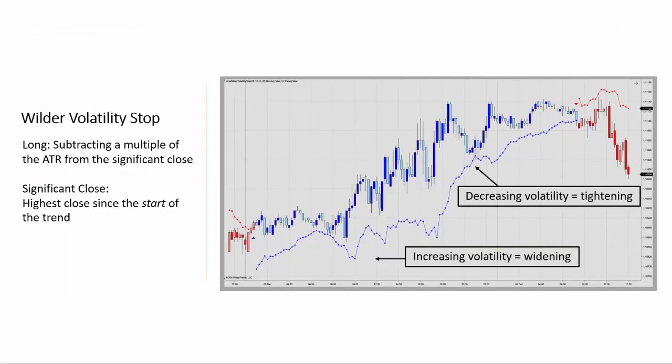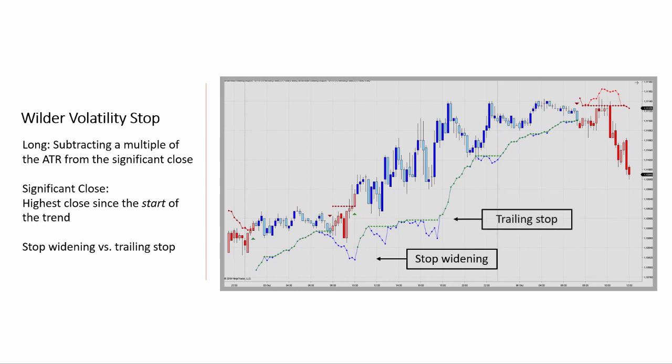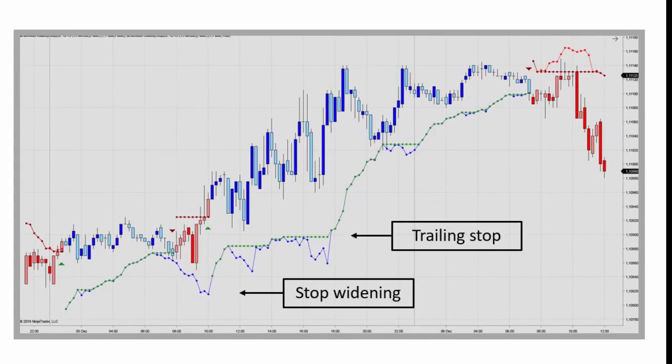In case you do not want to use this widening option, the indicator comes with the option of activating the conventional trailing stop feature. When that is selected, the stop widening is not permitted and the stop will only move in the direction of the position as we see here.